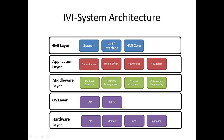The application layer contains a mix of applications all designed to provide specific functionality to the benefit of the user. Applications are dependent on other software — referred to as system software — to be able to execute. In a typical infotainment system, the application layer includes functionalities such as entertainment (USB multimedia), networking for connectivity like Bluetooth and Wi-Fi, and navigation.